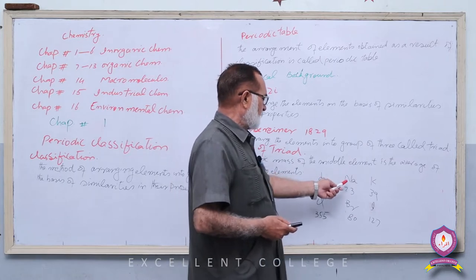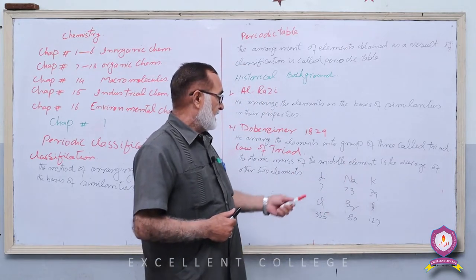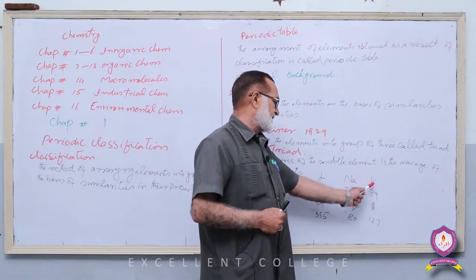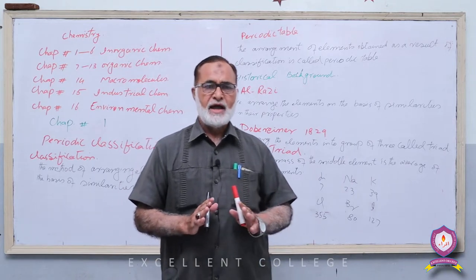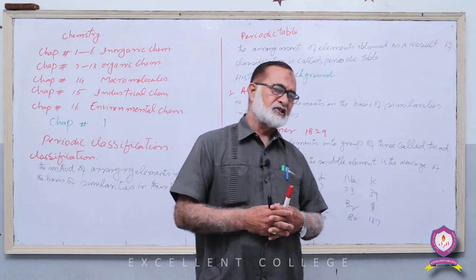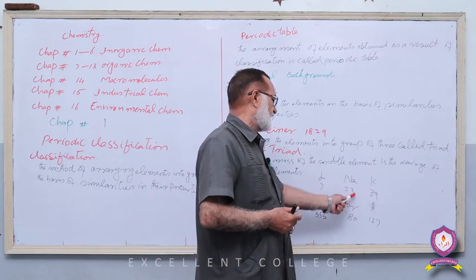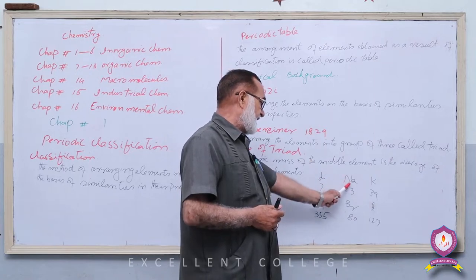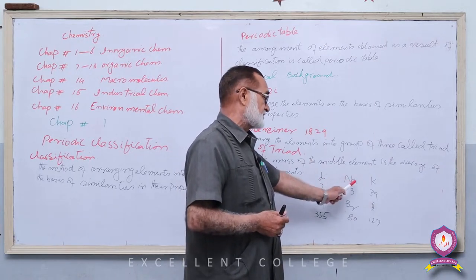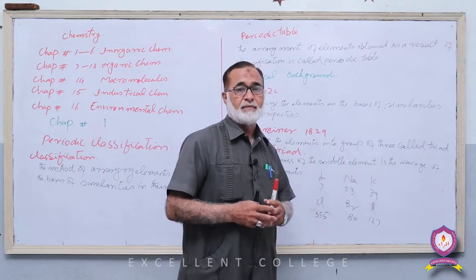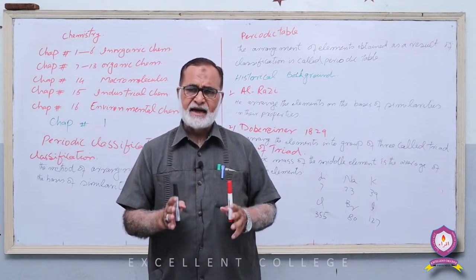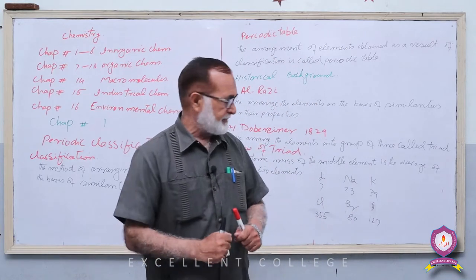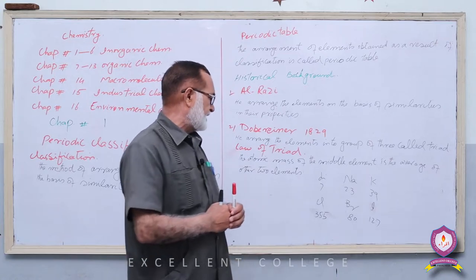پہلی example: Lithium, Sodium, and Potassium۔ Lithium کا atomic mass 7 ہے، Potassium کا 39 ہے — ان کو add کریں تو 46، divide by 2 تو 23 آتا ہے، جو کہ Sodium کا atomic mass ہے۔ Middle element کا atomic mass باقی دونوں کی average کے برابر ہے، اس لیے یہ ایک Triad ہے اور تینوں کی property same ہے۔